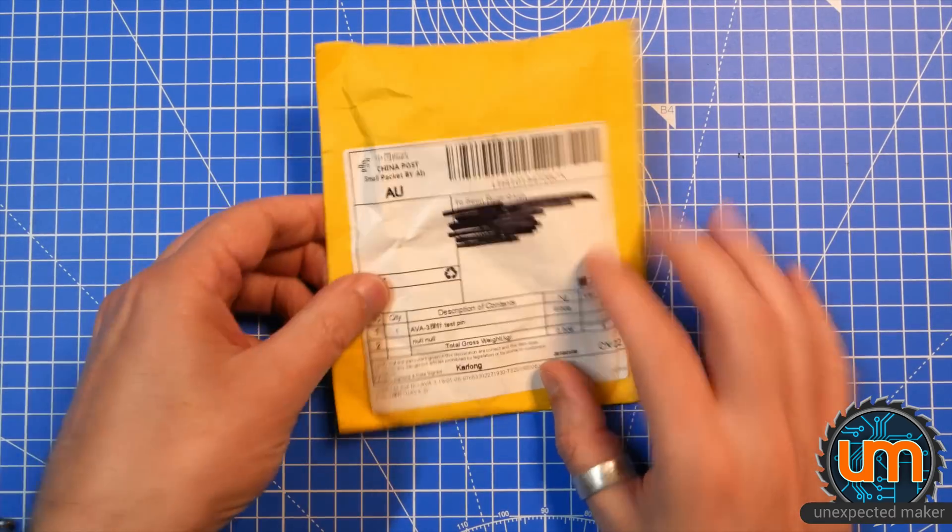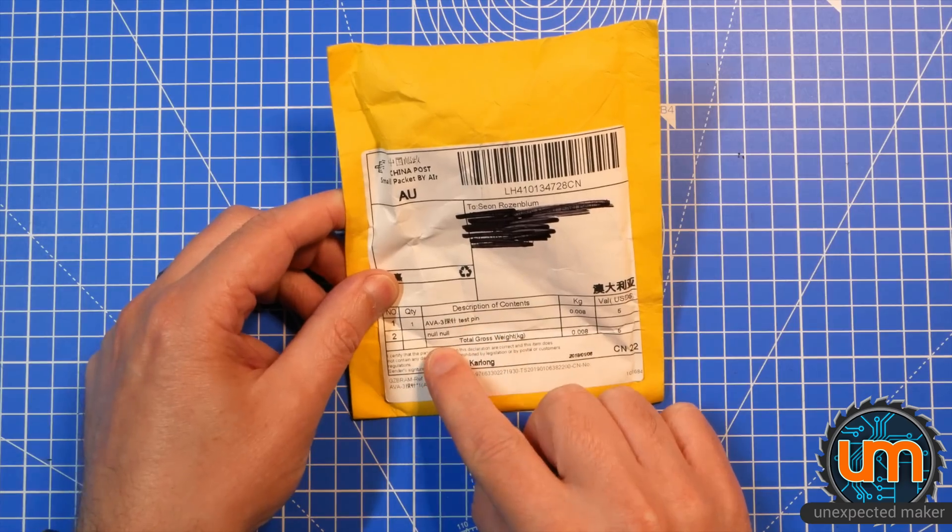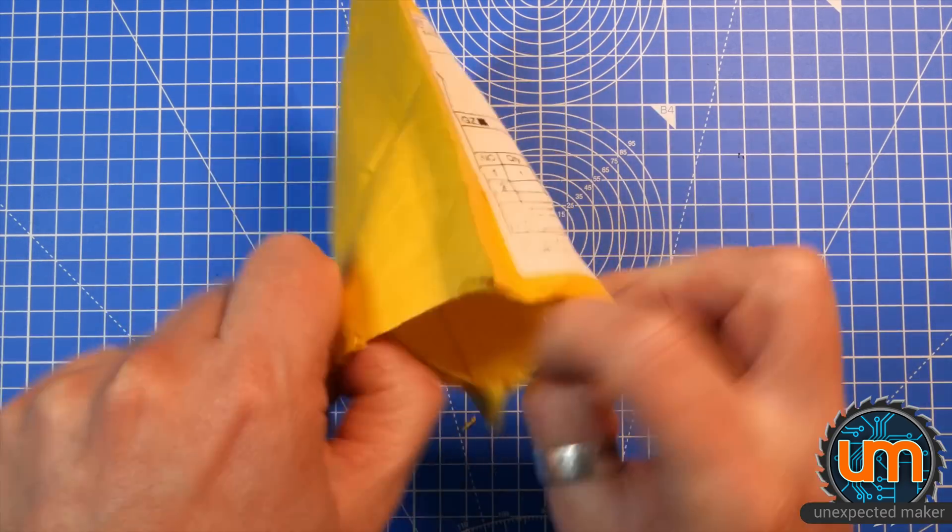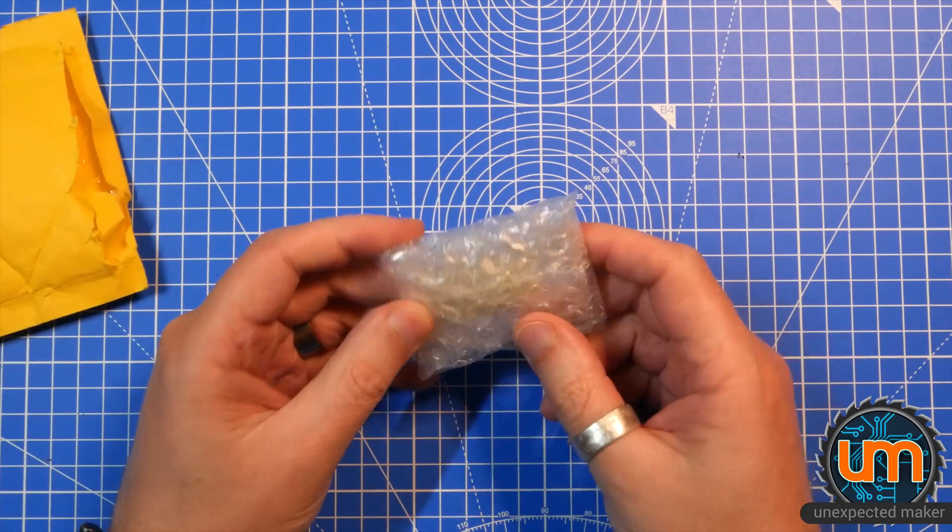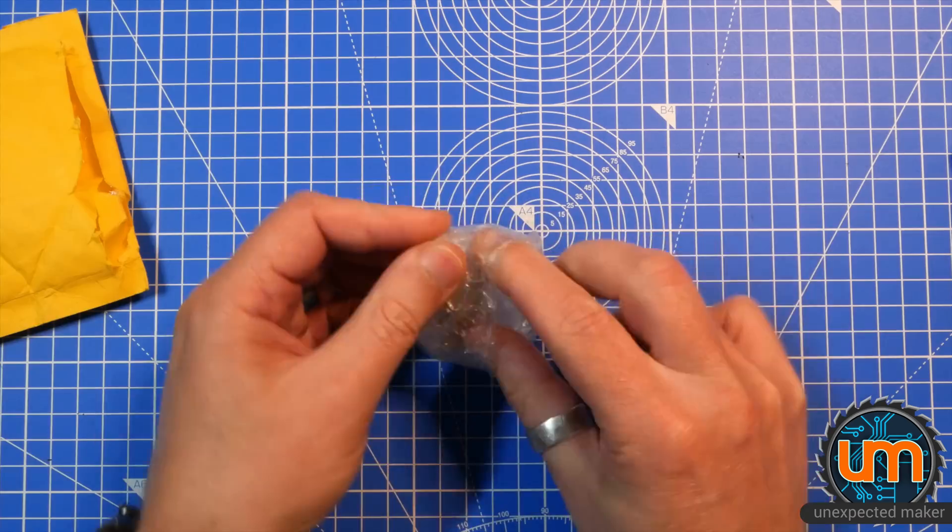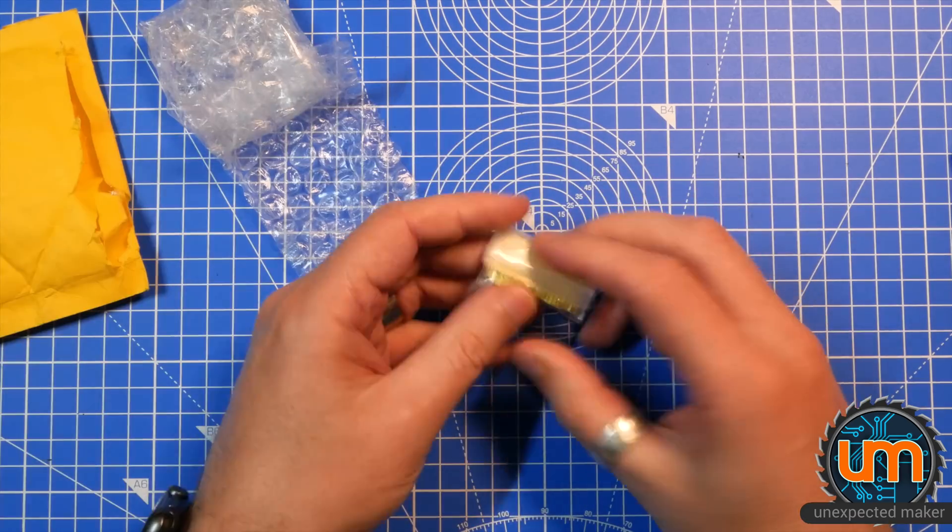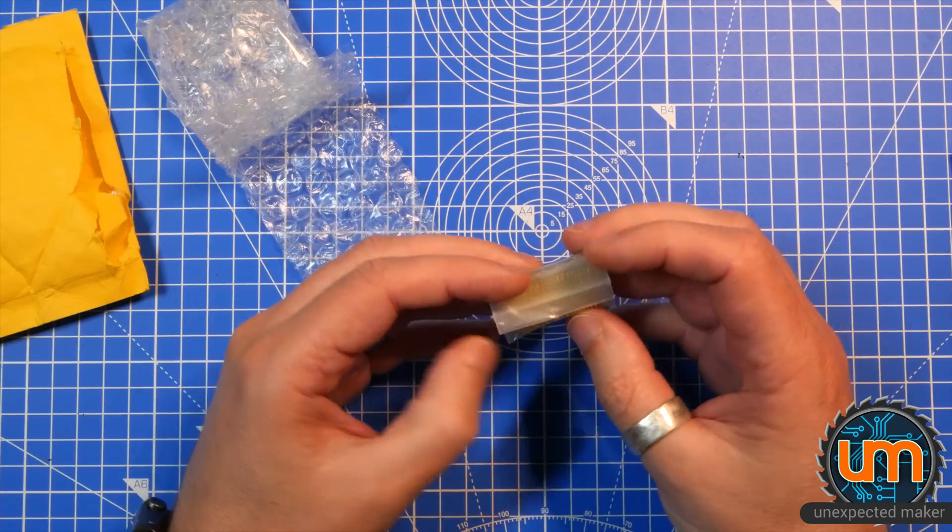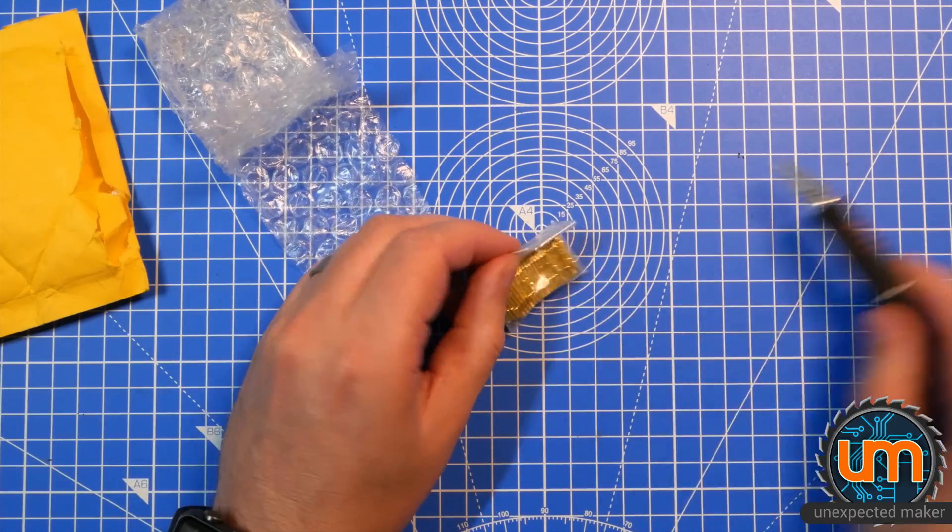First one says AVA3 test pin null null. I'm hoping these are the holder receptacles for my normal pogos. Looks like they might be. Let's see if I can open them without wrecking the bag. There's a bag in the bag. Here we go. Awesome. I don't know if I'm going to pull any of these out. What I might do is just show you what they look like in the bag. Otherwise it's going to go everywhere.